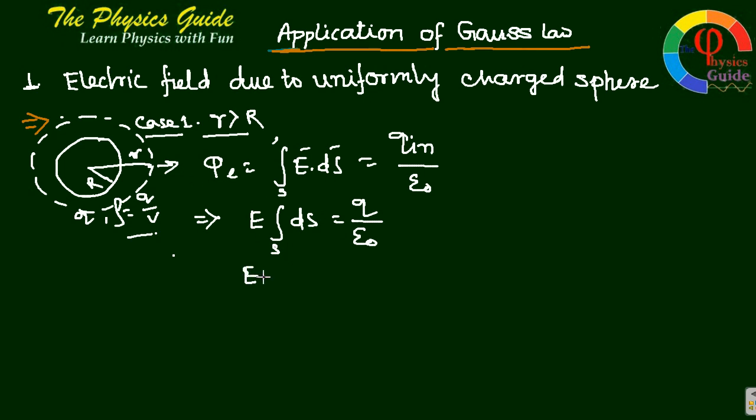E times 4πr² equals Q by ε₀. Therefore E equals Q over 4πε₀r². In vector form there should be a direction of r̂ because electric field direction is outward to the surface or normal to the surface.